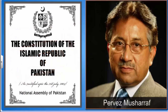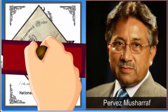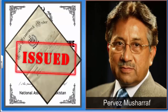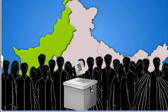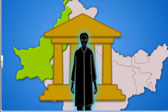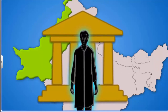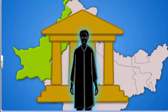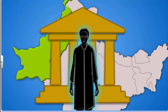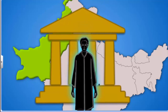He did this by issuing a legal framework order that gave the president the authority to dismiss the national or provincial assemblies. Elections were then held to the national and state assemblies. Thus Pakistan had elected representatives with some powers.